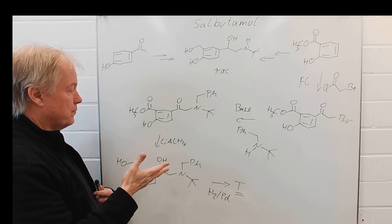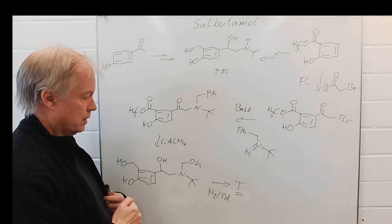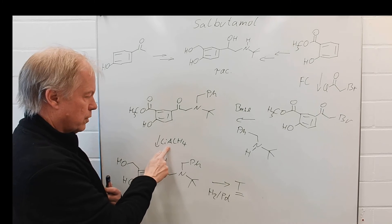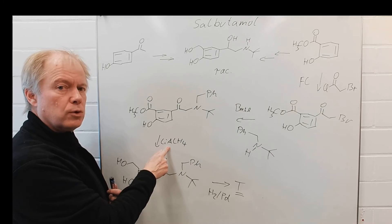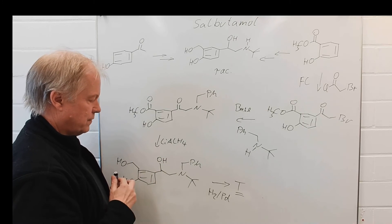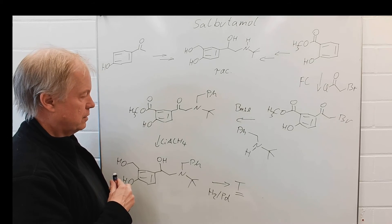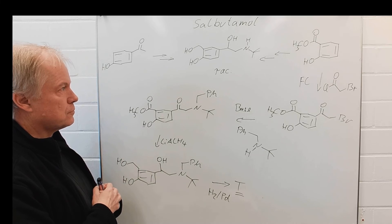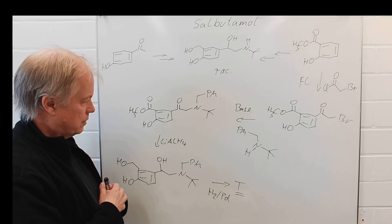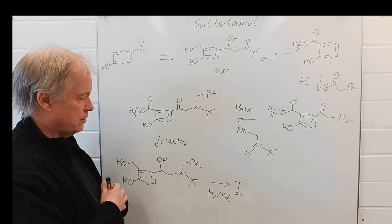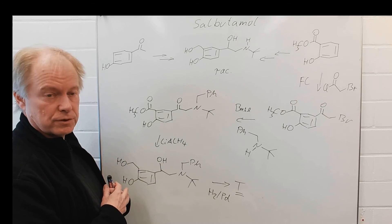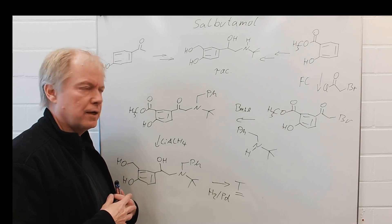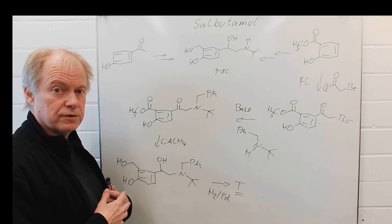According to the patent, this synthesis can be achieved in 30 to 40 percent yield. However, there is a problem: lithium aluminum hydride. You want to avoid this rather dangerous reagent on a large scale for industrial processes — it's more of a lab chemical. Therefore, industry has decided to develop an alternative synthesis avoiding lithium aluminum hydride, although the overall yield of that alternative synthesis is less than 30 percent, as we will see in the second part.